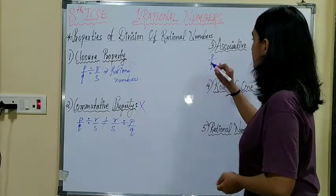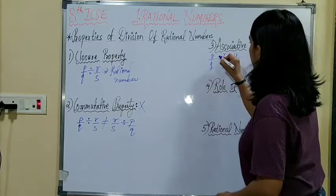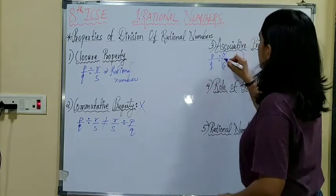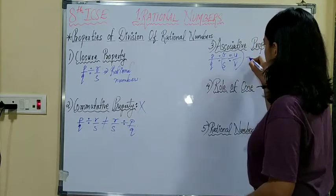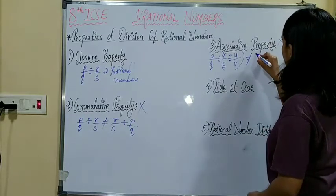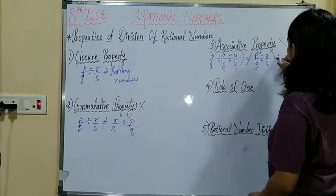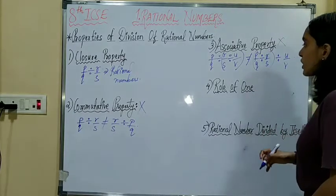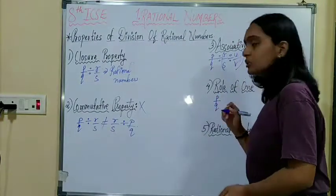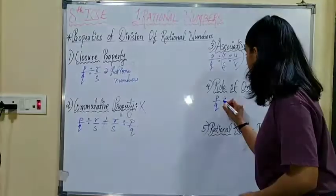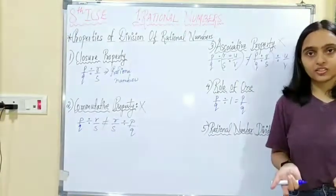Role of 1: when any rational number, say P upon Q, is divided by 1, you get the same rational number again. That is, you get the identity rational number.